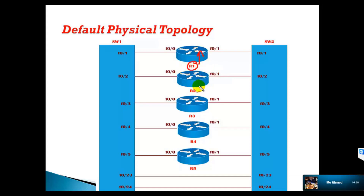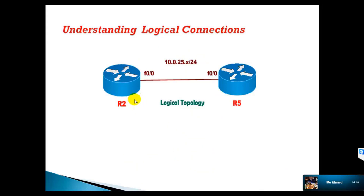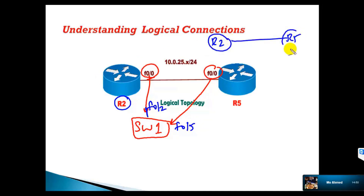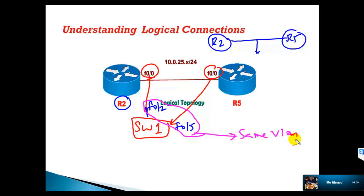This is router 1 and this is router 2, so router 2 is connecting to my router 5 here. As per our default physical topology, router 2 F0/0 is connecting to switch 1, and router 5 F0/0 is also connecting to switch 1. On switch 1, the router 2 port is F0/2 and the router 5 port is F0/5. In order to make sure that router 2 and router 5 are logically connected — even though they are not directly physically connected and go through the switch — we have to make sure that these two ports, F0/2 and F0/5, are part of the same VLAN. This is how we logically separate the connections between every two devices, representing them as part of a separate broadcast domain by placing them in a separate VLAN.